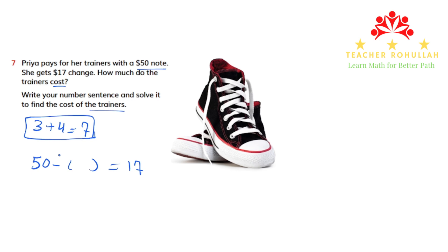To solve this problem I will use column subtraction, because we have subtraction here. To find the trainer's cost, I have to subtract 17 from 50. So we write 50 minus 17.